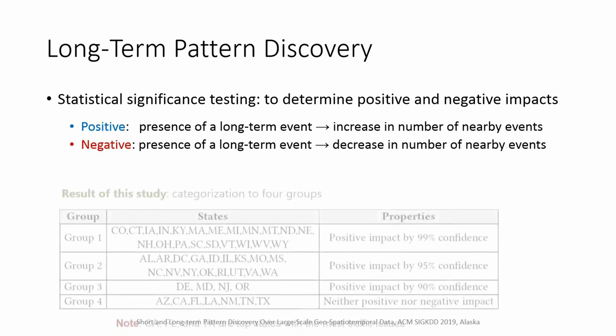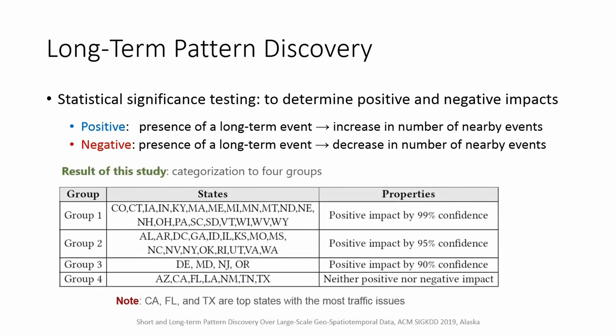Statistical significance testing reveals two types of impact: positive and negative. Positive impact means existence of a long-term entity causes more traffic issues, and negative impact means otherwise. By employing our new process, we explored four categories of states based on the type of impact. Additionally, we observed that the existence of a long-term geospatiotemporal entity usually has no impact on traffic flow for those states which usually suffer from more traffic issues, such as California, Florida, and Texas.